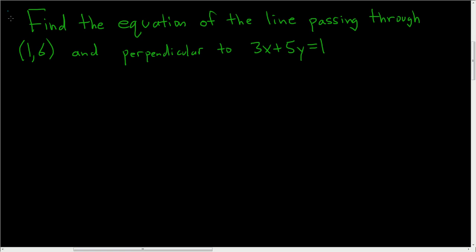Find the equation of the line passing through (1,6) and perpendicular to 3x plus 5y equals 1. To find the line we need a point and we need a slope. We've already got the point so that part is done.